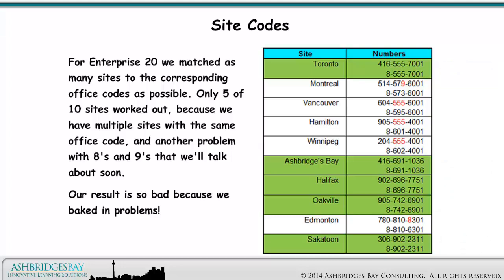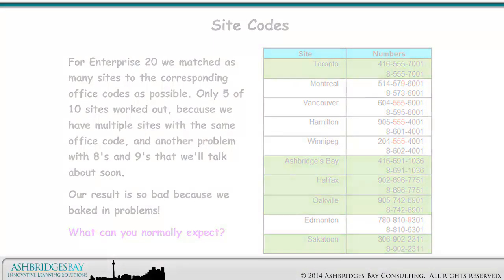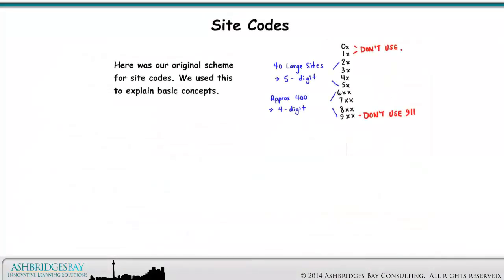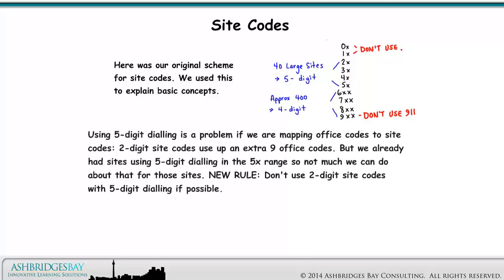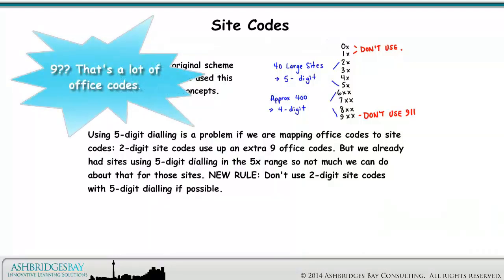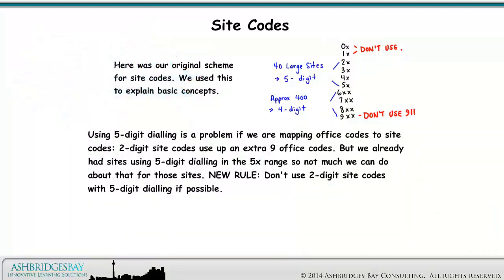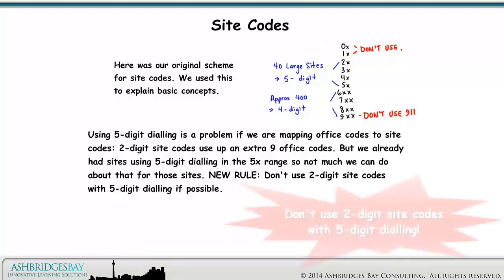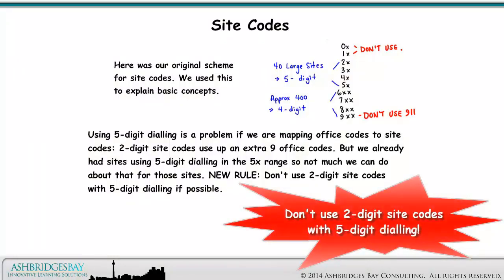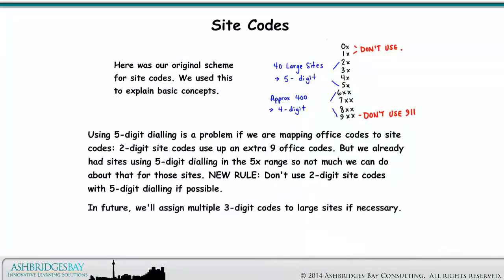Our result is so bad because we baked in problems. Using 5-digit dialing is a problem if we are mapping office codes to site codes — two-digit site codes use up an extra 9 office codes. But we already had sites using 5-digit dialing in the 5x range, so not much we can do about that for those sites. New rule: don't use 2-digit site codes with 5-digit dialing if possible. In future, we'll assign multiple 3-digit codes to large sites if necessary.